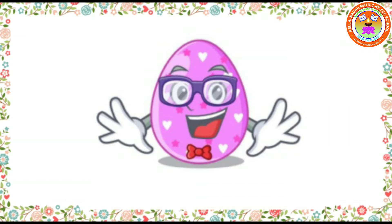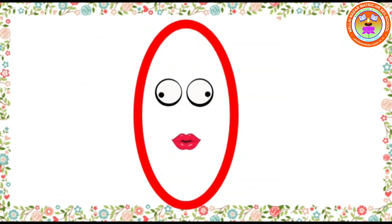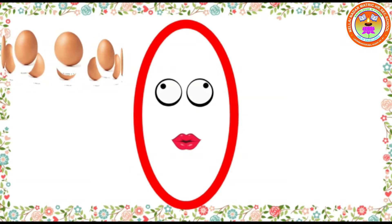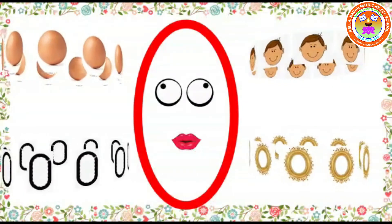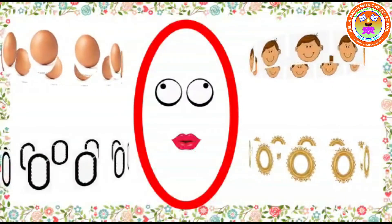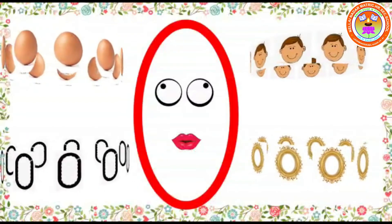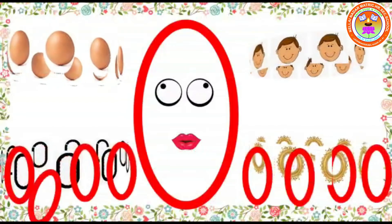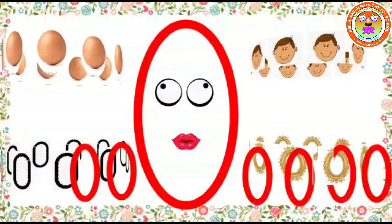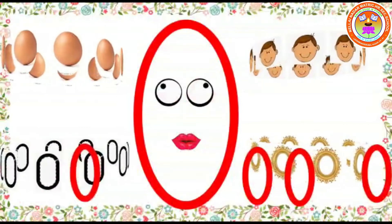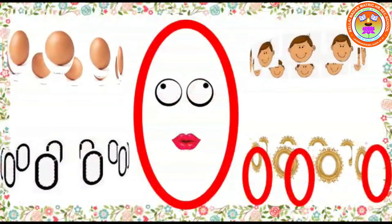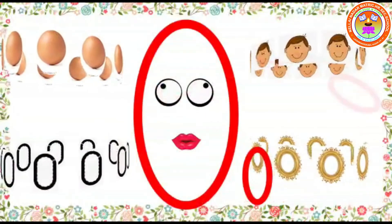Now we will see the rhyme of oval. What's the shape of an egg? What's the shape of my face? What's the shape of a race track? What's the shape of a photo frame? Oval, it's oval! Oh well, it's oval all around.